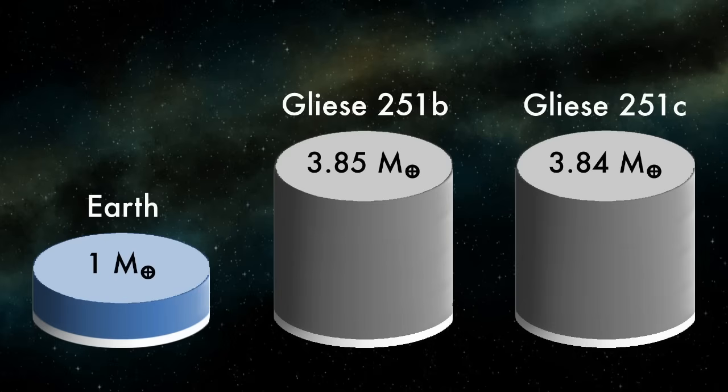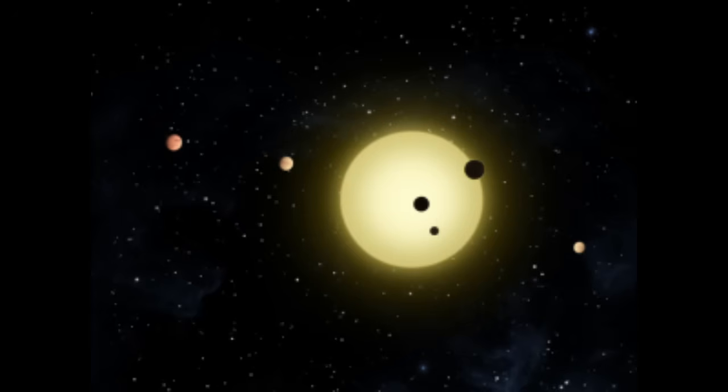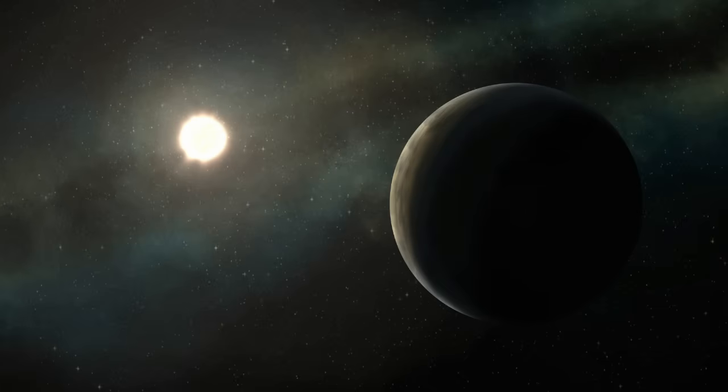This second planet, known as Gliese 251c, is nearly identical to the first. In fact, the two planets' most probable masses differ from each other by just a quarter of a percent. This suggests that the Gliese 251 system, like most known extrasolar systems but very much not like ours, is what is known as a similar system, with planets of nearly equal mass spaced a regular distance apart. The planet orbits its star in a little under 54 days.